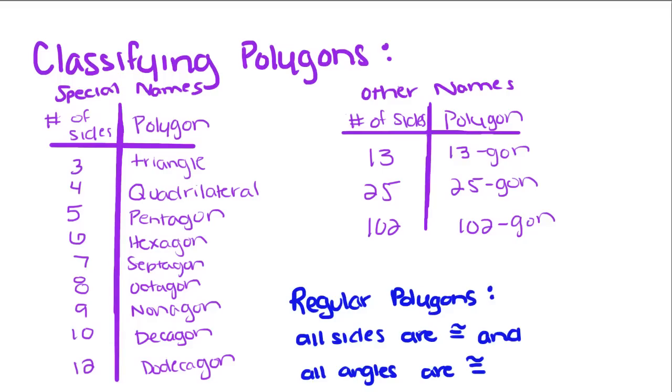Today we're going to talk about classifying polygons. Polygons are named based on the number of sides they have.